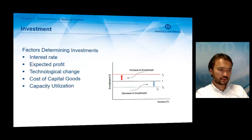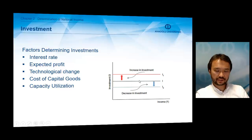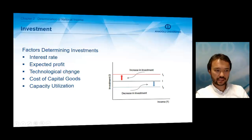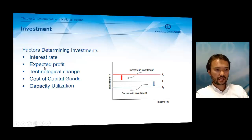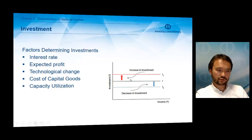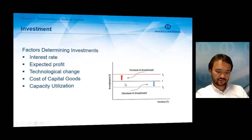The other component of expenditures is investment expenditures. We have a horizontal line showing the investment function because there is no relationship between income level and investment level. Other factors affect investment expenditures: interest rates, expected profit, technological change, cost of capital goods, and capacity utilization. When there is a positive effect on investment, the investment function shifts upward; a negative effect shifts it downward.